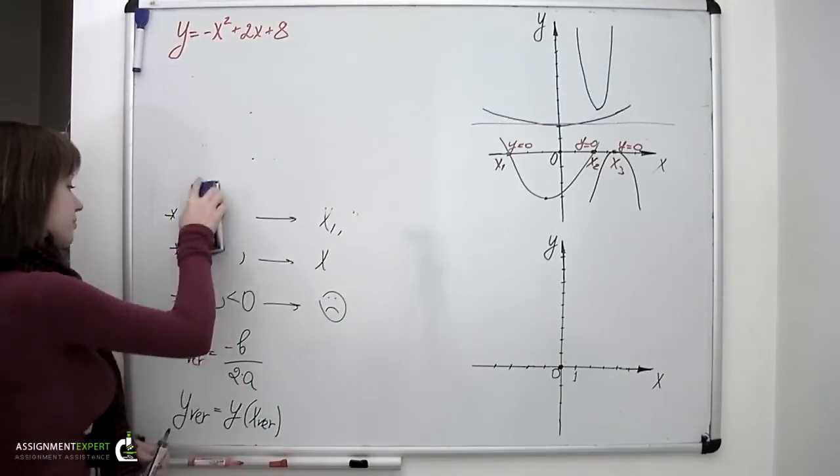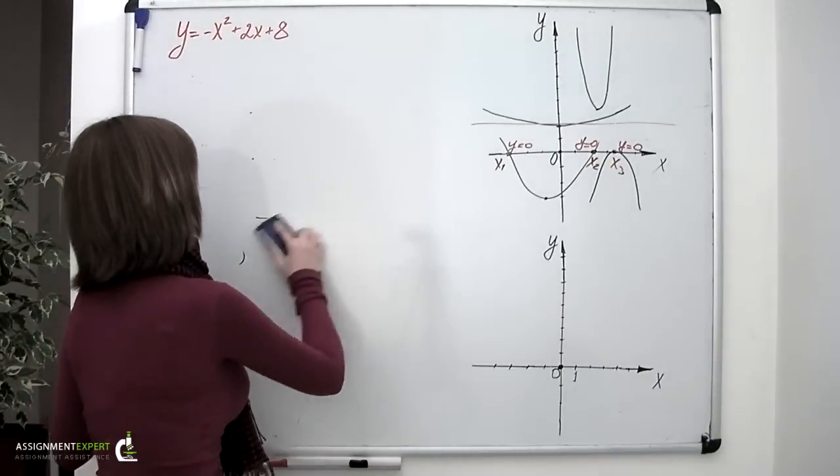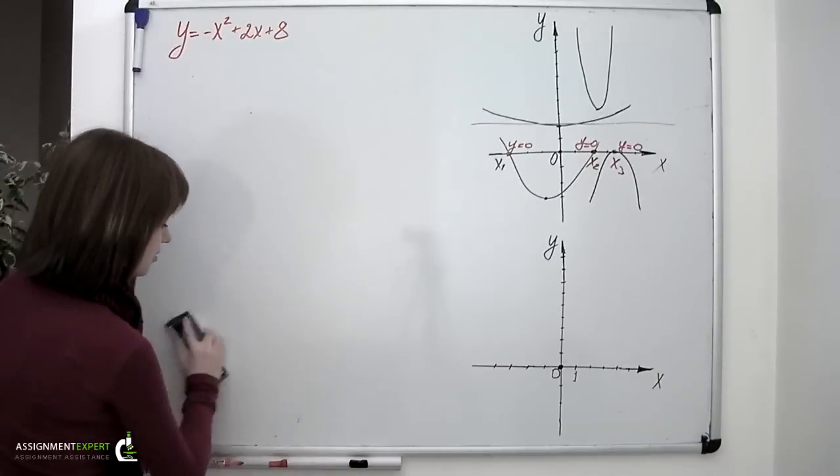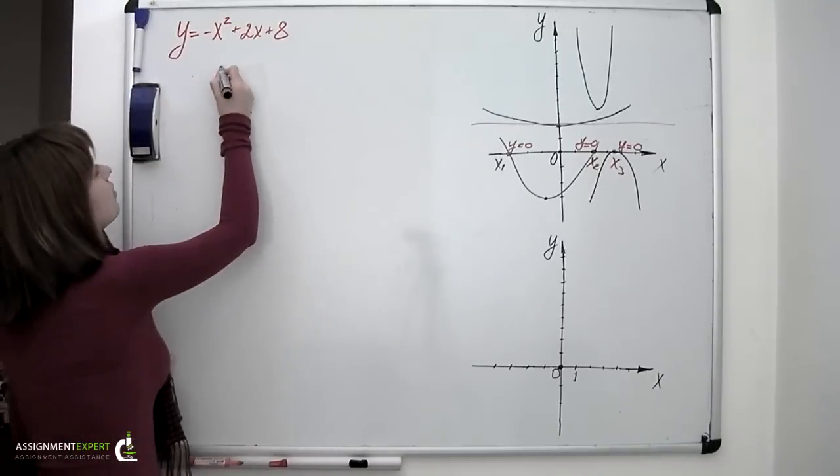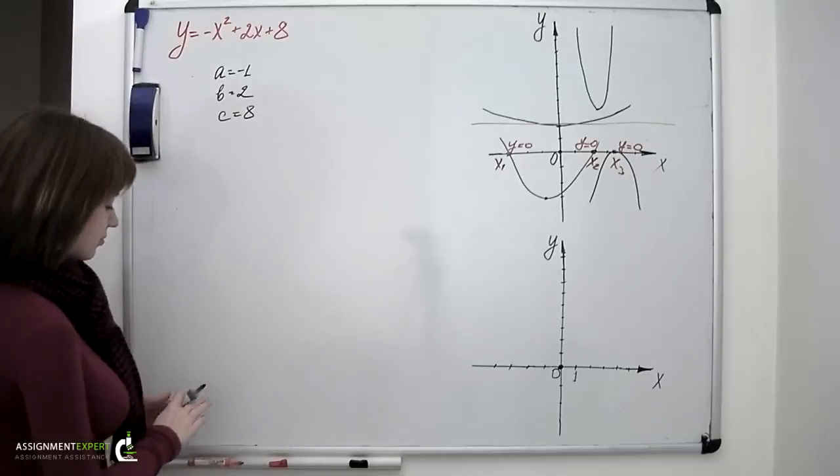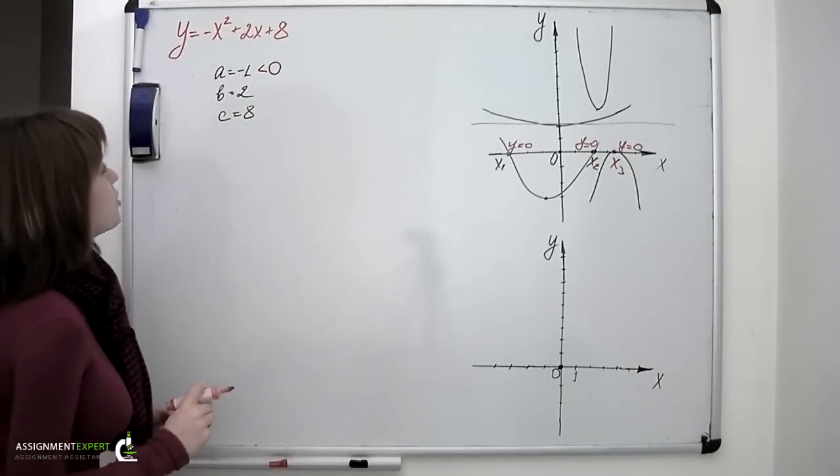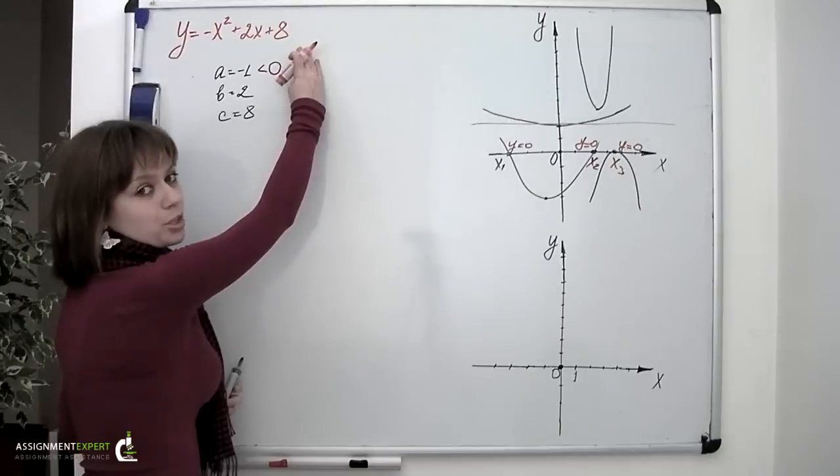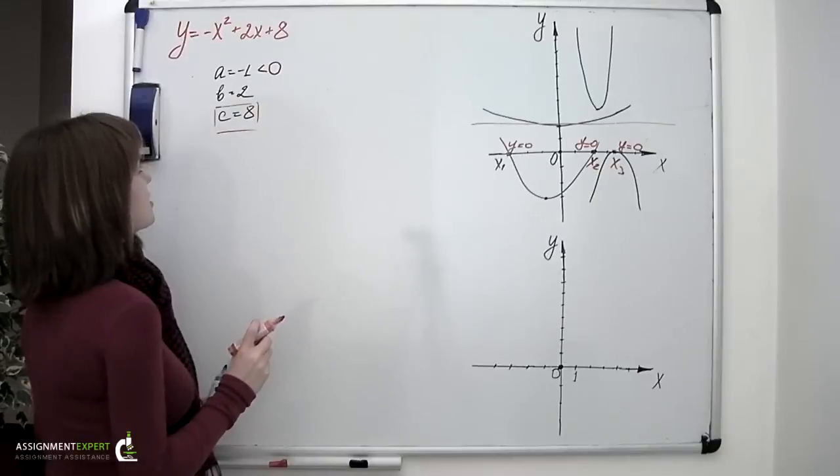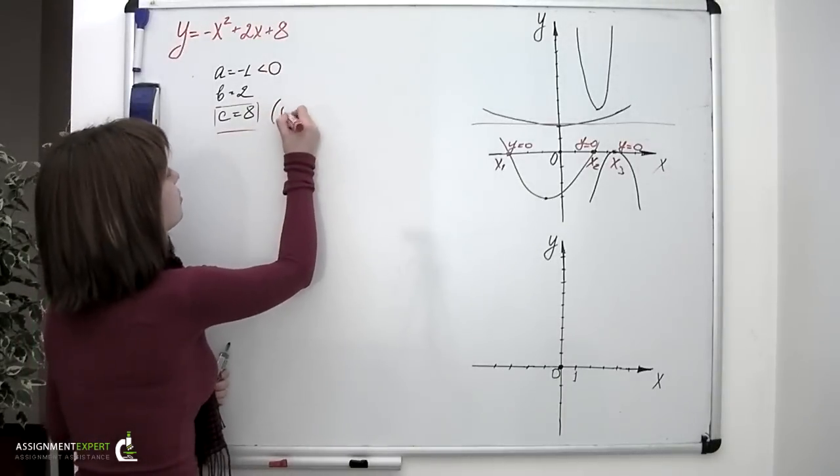And about this parabola: y equals negative x squared plus 2x plus 8. First let us determine the coefficients a, b and c for this particular case. So a equals to negative 1, b equals to 2, and c equals to 8. Let's see. A equals to negative 1, a negative number, which means that the branches of this parabola are directed downwards. Then we have the free term or the y-intercept. So the parabola crosses the y-axis in the point with the coordinates 0 and 8.